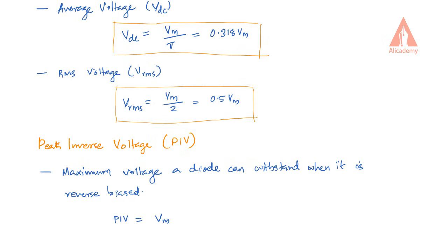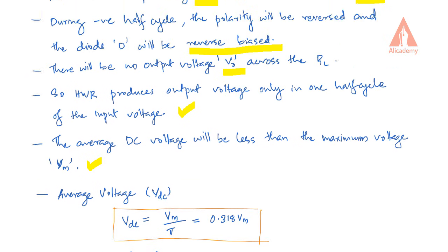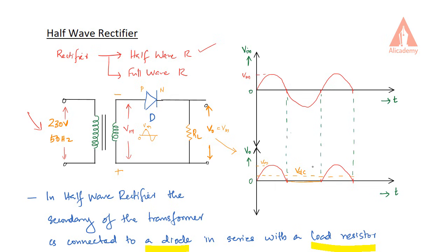Another concept is Peak Inverse Voltage (PIV). It is the maximum voltage a diode can withstand when it is reverse biased. In the half-wave rectifier case, the Peak Inverse Voltage PIV is equal to Vm. So when the diode is reverse biased, the maximum reverse biasing voltage it must withstand is Vm.